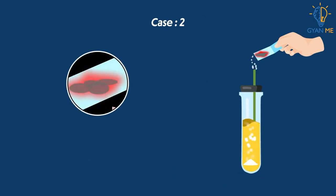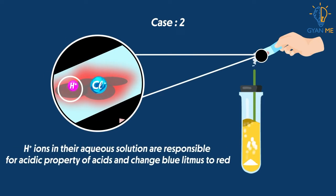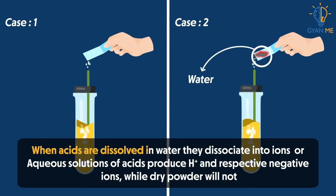Students, as you already know, dissociated H+ ions in their aqueous solution are responsible for the acidic property of acids and change blue litmus paper to red. Thus, we can say that when acids are dissolved in water, they dissociate into ions.